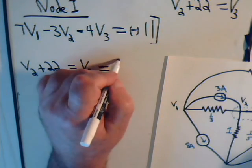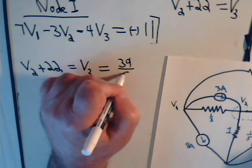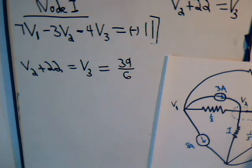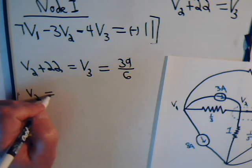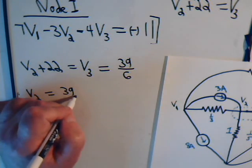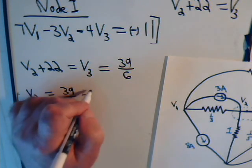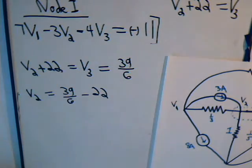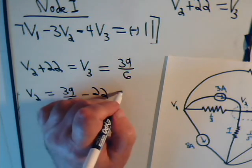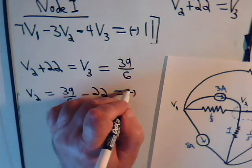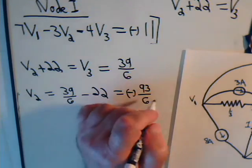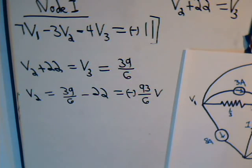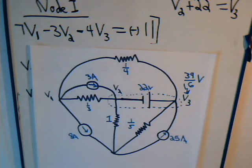Which equals 39 over 6, so V2 equals 39 over 6 minus 22. So V2 comes out to be equal to something like minus 93 over 6 volts.